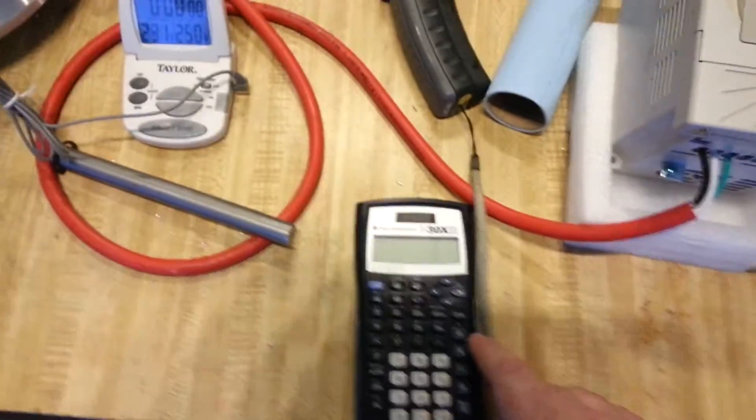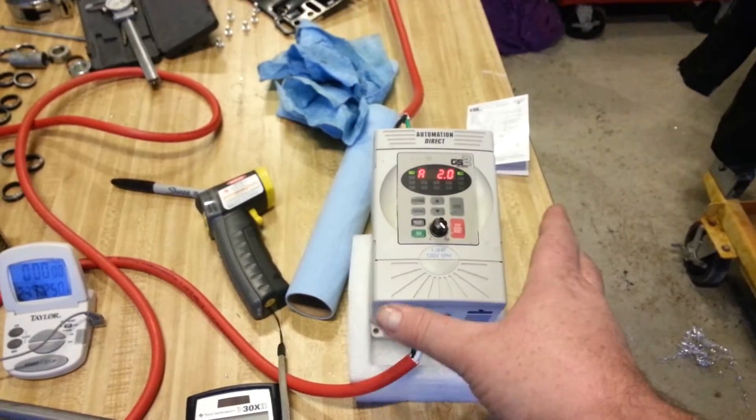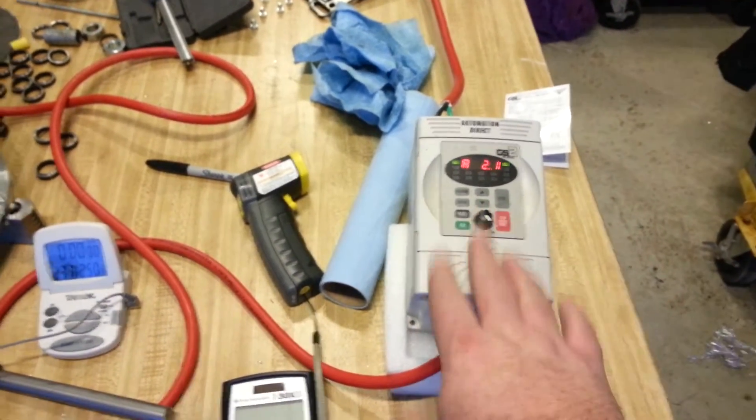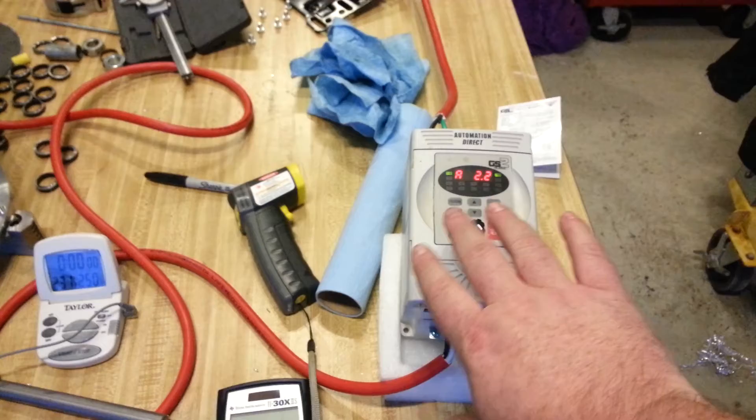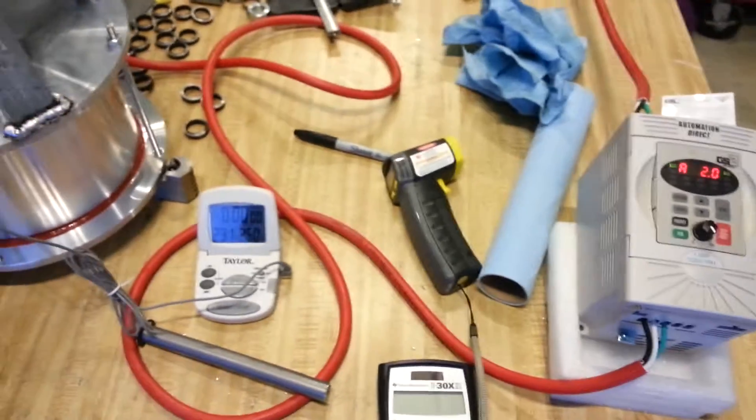This thing is set up to run at a specific amp rating that you program internally. So you can keep it at that amperage and then bring up the RPM, keeping your power input always the same.